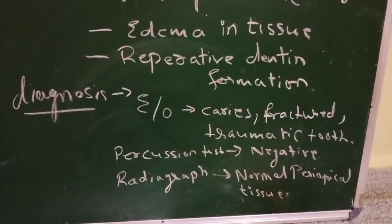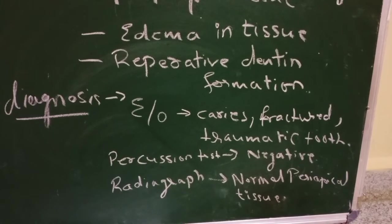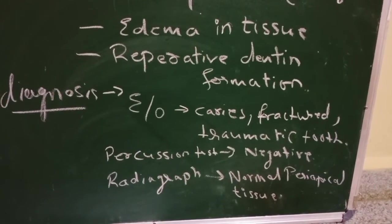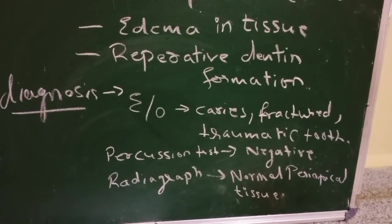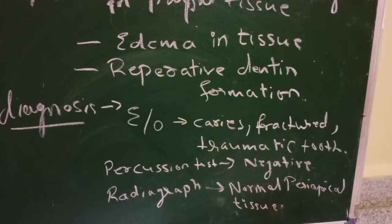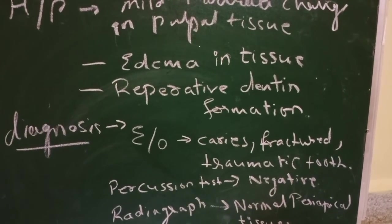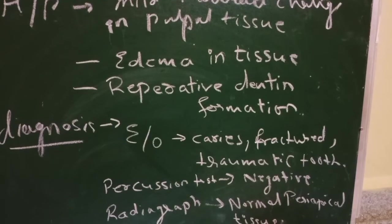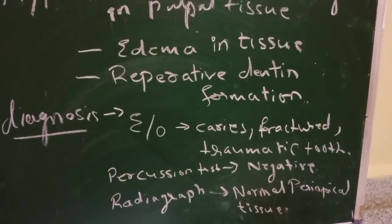For diagnosis, on oral examination we can see mild initial caries, sometimes undetected fractures, and sometimes traumatic tooth. On percussion we get a negative response, and by radiograph we can see normal periapical tissue with no periapical lesion present. The patient may complain of sharp pain mainly due to cold, sweet, or sour stimuli.